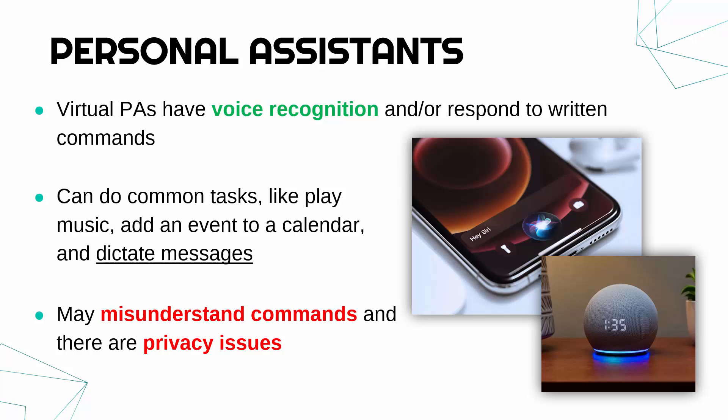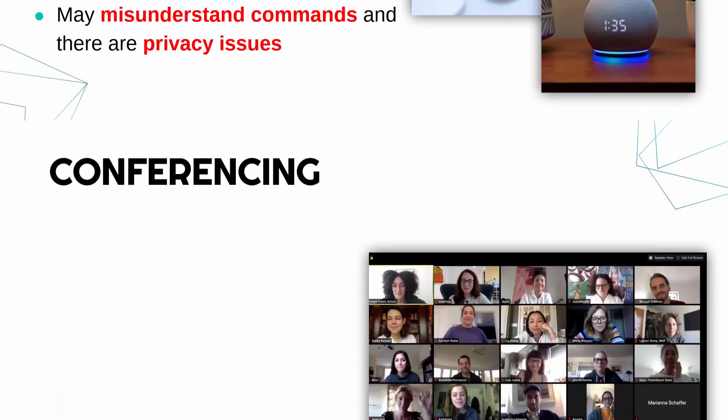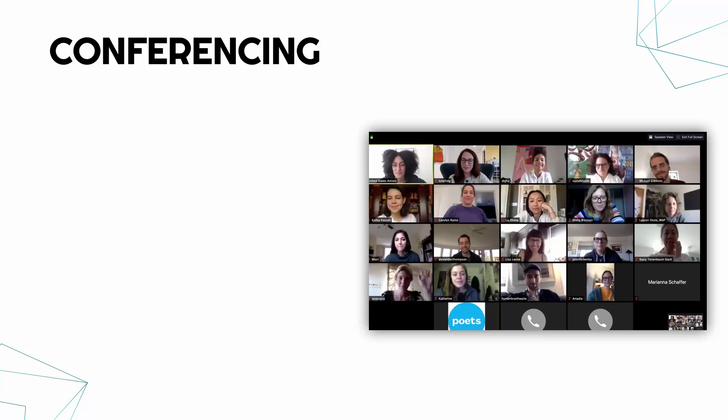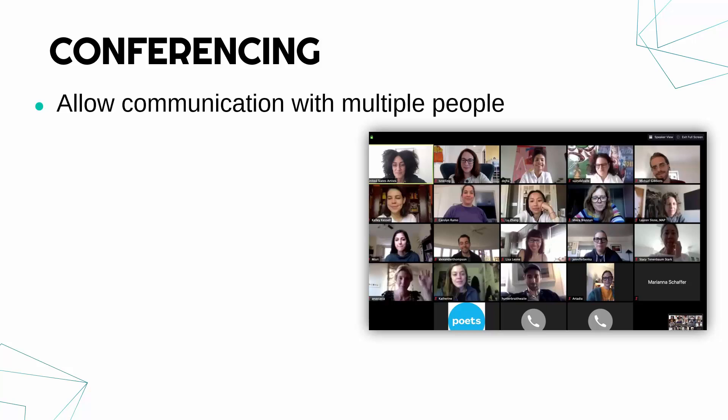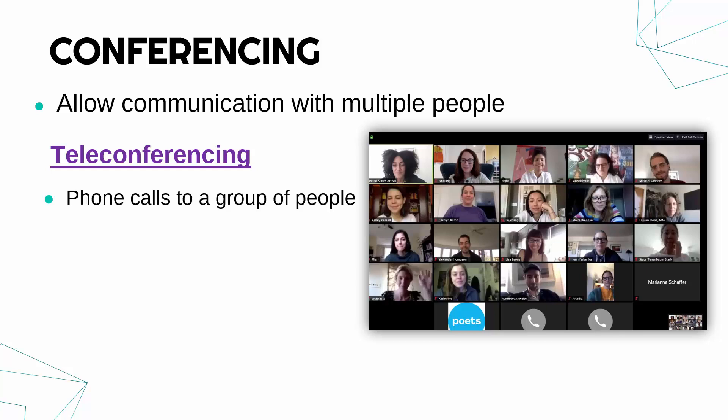The third and final method is conferencing software. Generally, this is where you're communicating with multiple people at once. A VoIP call could be to multiple people, but a phone call is usually to one person. Conferencing software is designed to communicate with lots of people simultaneously. Teleconferencing is the term for a large call — either video or audio — to a group of people.